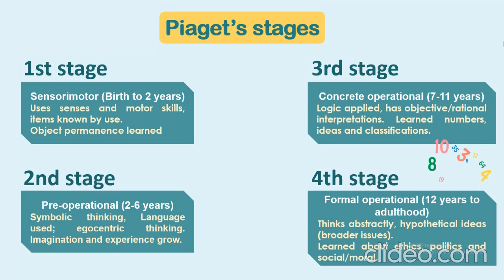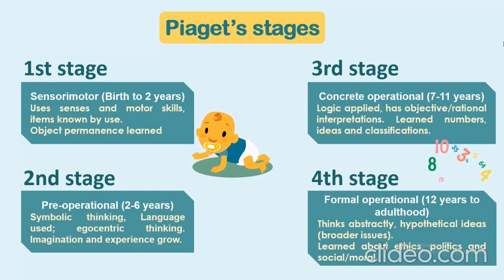Here are some examples of Piaget's periods of cognitive development. Birth to 2 years: the sensorimotor stage, where children use their senses and motor skills, develop intentional use of objects, and learn object permanence. Birth to 6 years: the pre-operational stage, characterized by symbolic thinking, language use, egocentric thinking, imagination, experience and growth, with the child at the center.